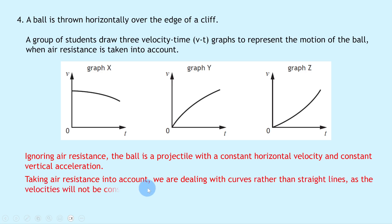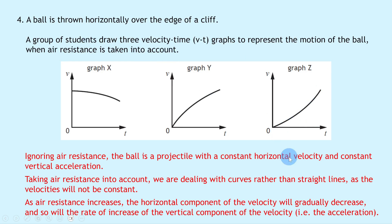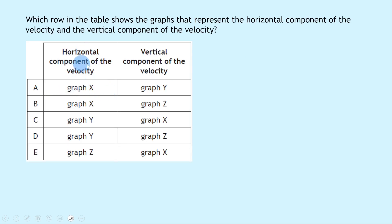With air resistance, the horizontal component of velocity will gradually decrease, as shown by graph X. The rate of increase of the vertical component (i.e. the acceleration) decreases gradually, as shown in graph Y. Graph Z would show an increasing acceleration, which wouldn't be the case with air resistance. So graph X shows the horizontal component and graph Y shows the vertical component, giving answer A.